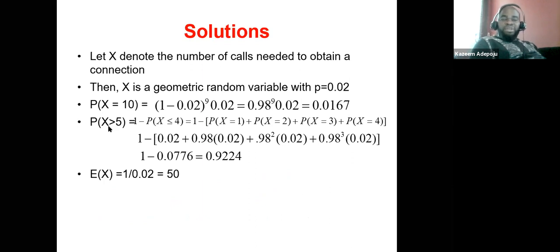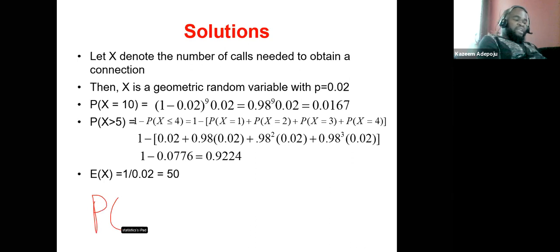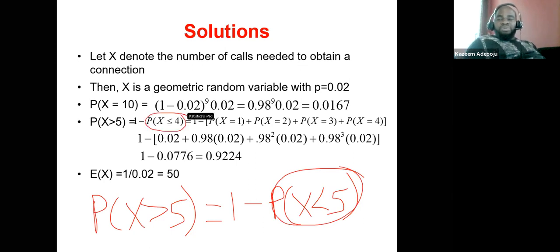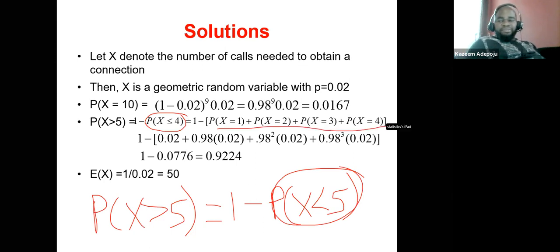For more than five calls, since x going to six, seven... to infinity takes forever, I use: P(X > 5) = 1 − P(X ≤ 4), considering x equal to one through four. I plug each into the geometric formula, add them together, and subtract from one to get the result.